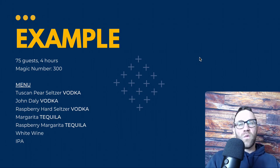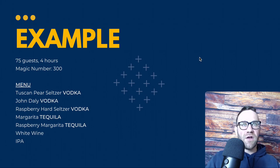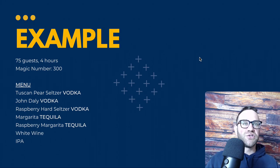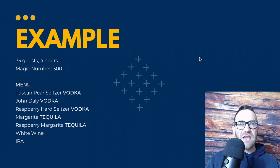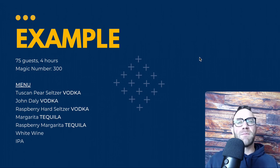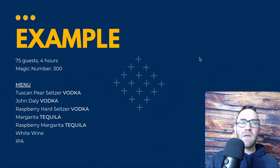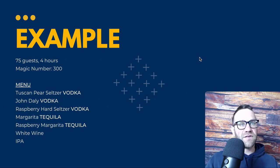Here's an example: 75 guests for four hours. I'll send an email saying your magic number is 300 drinks — this is your baseline. If you want to play it safe, it could be 350 or 400, and you can buy some backup bottles. Then here's what the menu is, maybe a couple of signature drinks we've talked about.